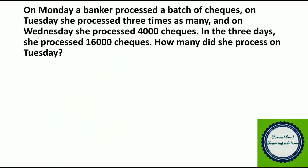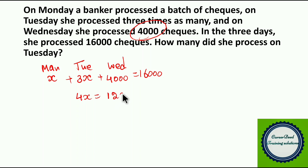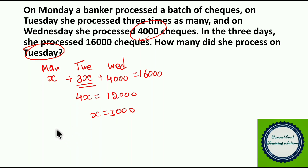Moving to question number 8. On Monday, a banker processed a batch of checks. On Tuesday, she processed three times as many. On Wednesday, she processed 4,000 checks. In three days she processed 16,000 checks. How many did she process on Tuesday? Let Monday be X, Tuesday is 3X, Wednesday is 4,000. So X plus 3X plus 4,000 equals 16,000. That gives 4X equals 12,000, so X equals 3,000. Tuesday she processed 3 into 3,000 = 9,000 checks.